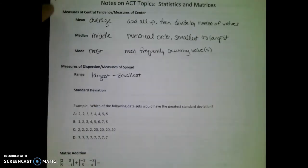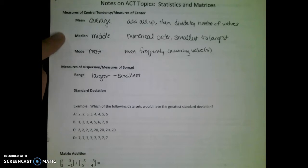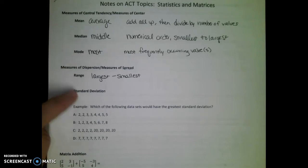Mean, median, and mode are ways to measure the center of the data. Range and standard deviation are ways to measure the spread of the data. So for both range and standard deviation, the greater the number, the more spread out the data is.